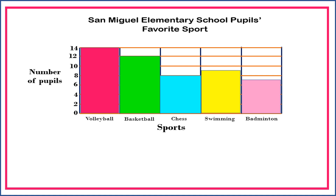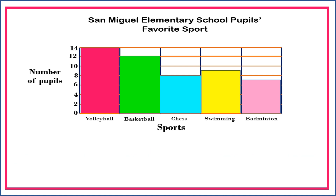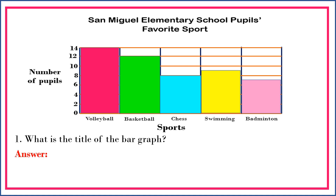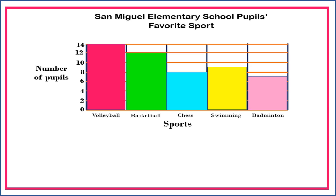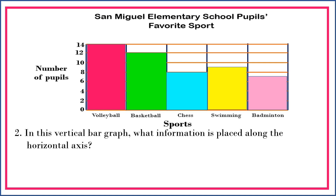What kind of bar graph is this? Yes, you are right — this is a single vertical bar graph. So let's interpret the data in this graph by answering some questions. What is the title of the bar graph? The title of the bar graph is 'San Miguel Elementary School Pupils' Favorite Sport.'